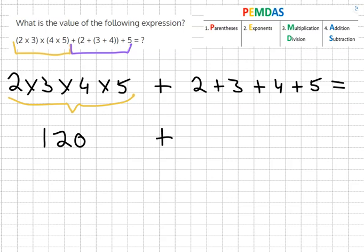Plus 2 plus 3 plus 4 plus 5. And then moving on to the addition, it's going to be 120 plus 2 plus 3 plus 4 plus 5.